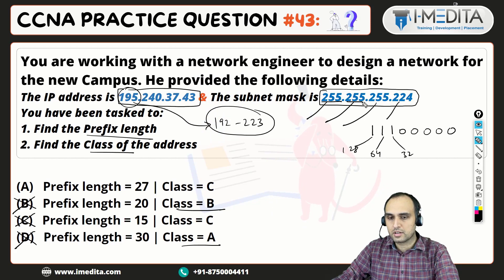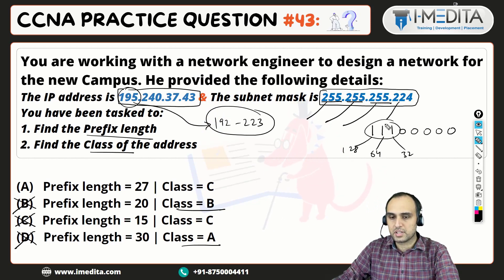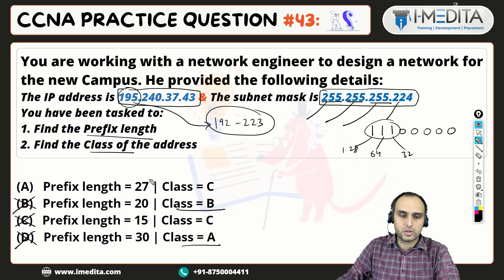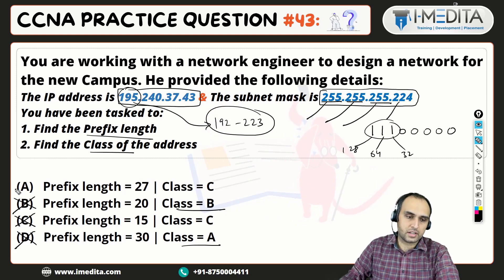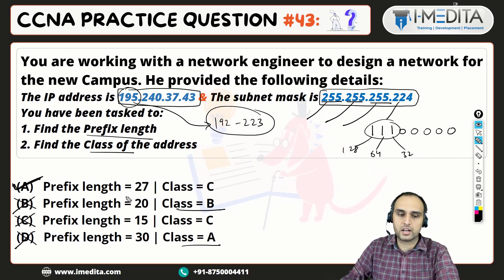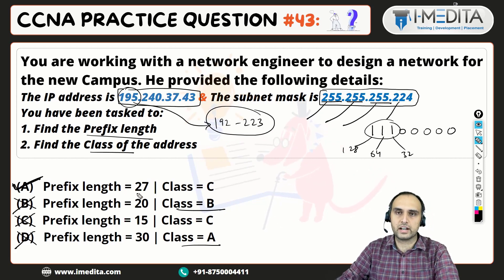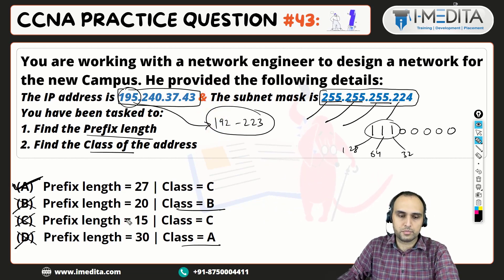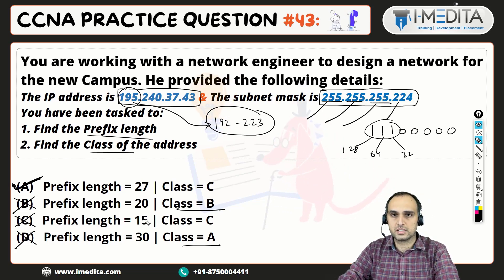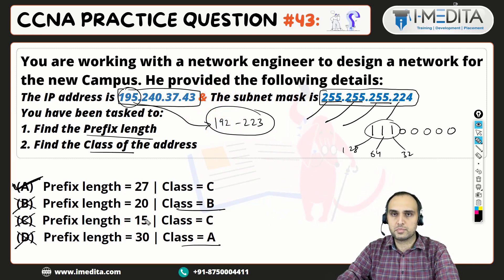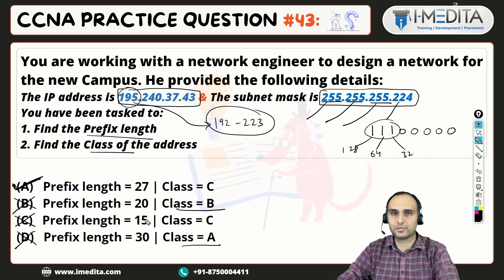So that gives us 8, 16, 24, and 27 — making it a /27 prefix. Option A is the right answer. Although we can rule out the answer quickly, doing the exact calculation confirms it. I hope you can understand it. Thanks for watching.